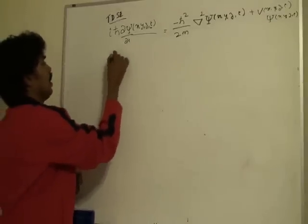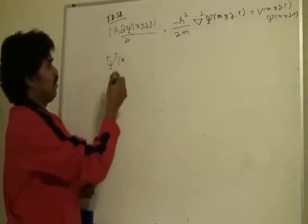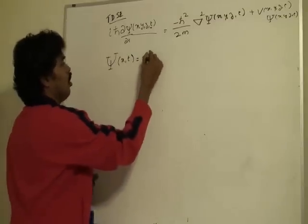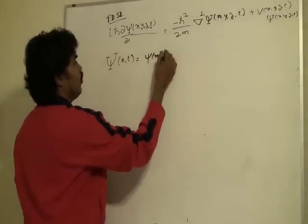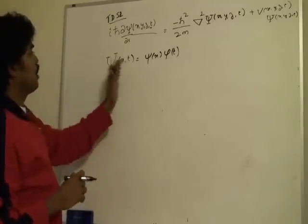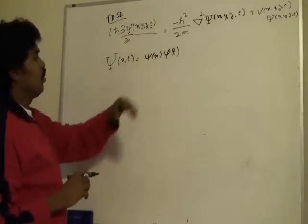Again, this ψ, let me take one parameter for simplicity, ψ(x,t) can be written as small ψ into φ of t. So basically it is separation of parameters that this ψ function can be written as x and t.